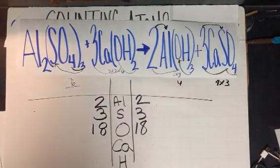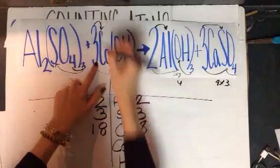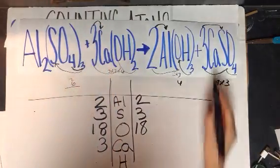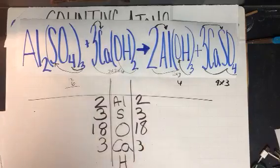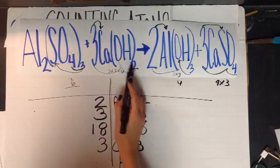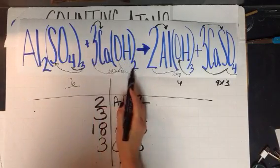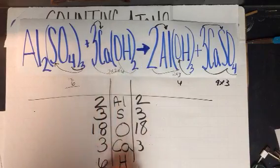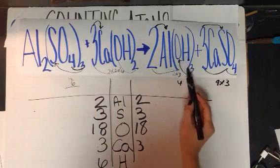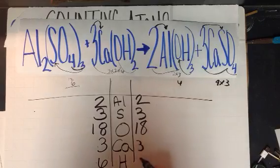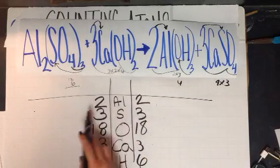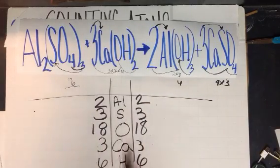Going on. Three calciums, three calciums. How many hydrogens? I have two hydrogens seen here times three. So three times two is six hydrogens. I have three hydrogens seen here times two. Six hydrogens here. Is this balanced? The answer is yes.